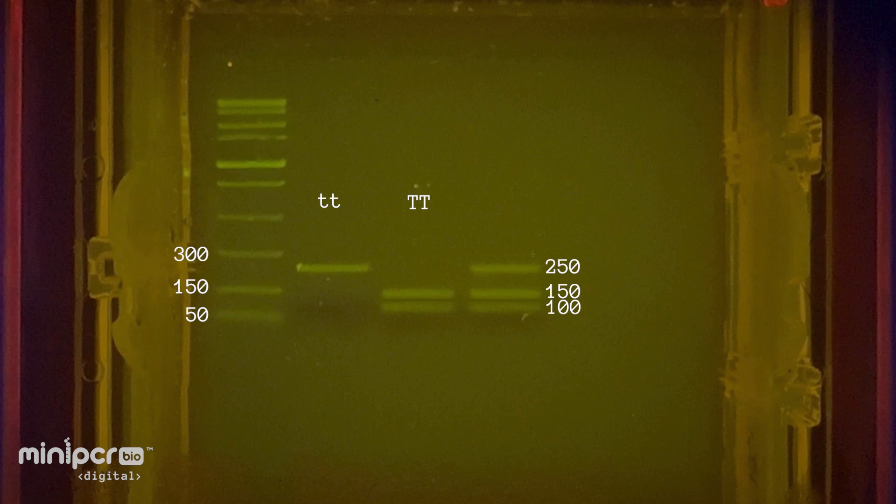The 250 base pair band represents DNA from the non-taster allele, and the 150 and 100 base pair bands represent DNA from the taster allele. Therefore, this individual has the big T, little t genotype.